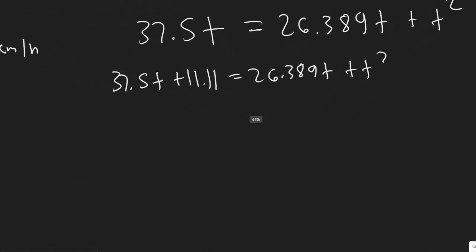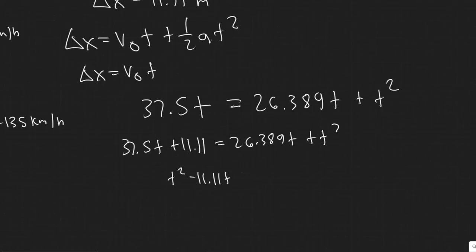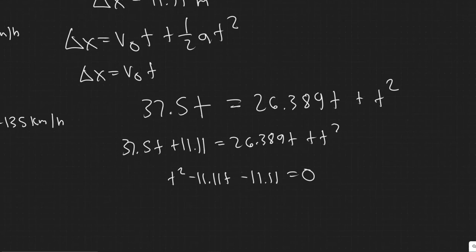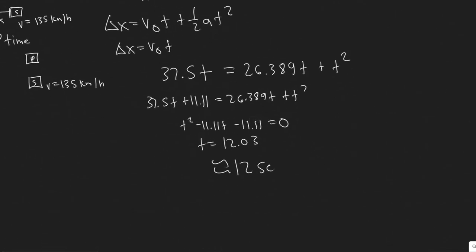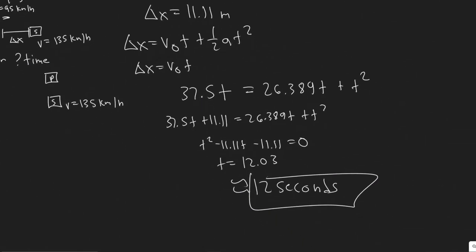Moving terms to one side gives: t-squared minus 11.11t minus 11.11 equals zero. Plugging this into a graphing calculator or using the quadratic formula to solve for when it crosses zero, you get t equals approximately 12.03 seconds, which we round to 12 seconds. That's how long it takes for the police car's distance to equal the speeder's distance — i.e., the time for the police car to catch up.